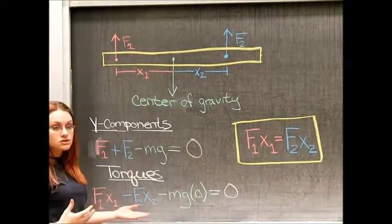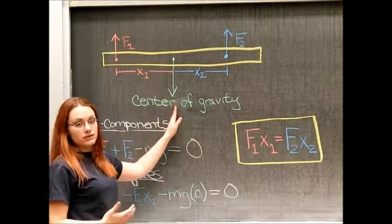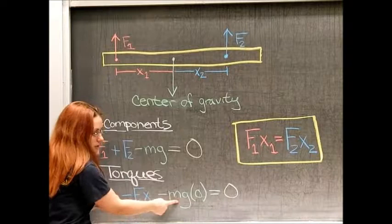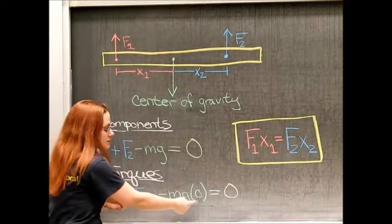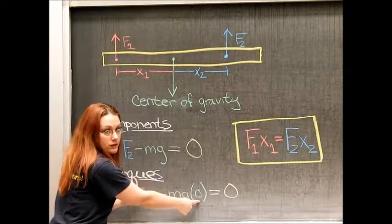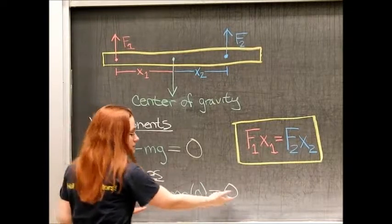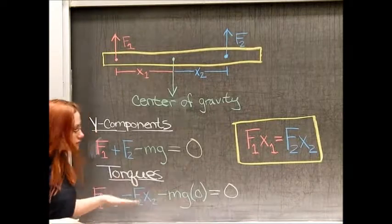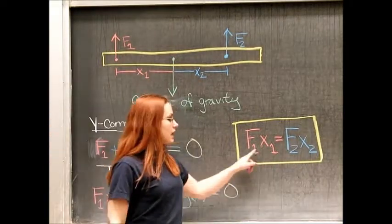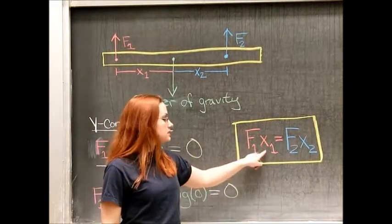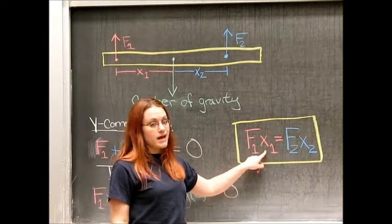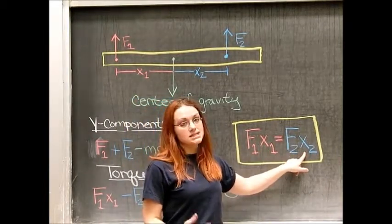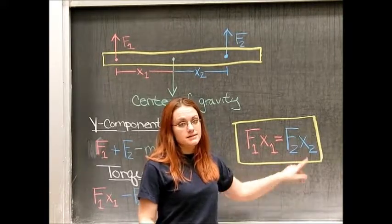And then our last torque is what's happening at the center of mass. Therefore, that is minus the weight of the stick times the distance from the center of mass, which is zero. And this again all equals zero because the system is not rotating. If we then solve this equation, we simply get that the force applied by finger one times the distance it's away from the center of mass must equal the force applied by finger two times the distance it is away from the center of mass.